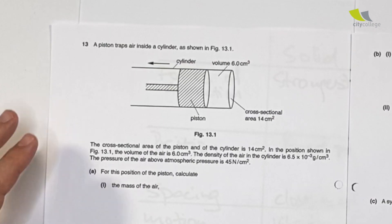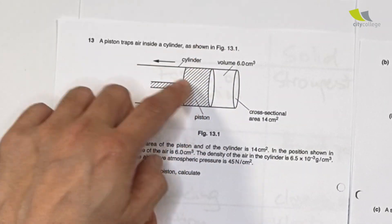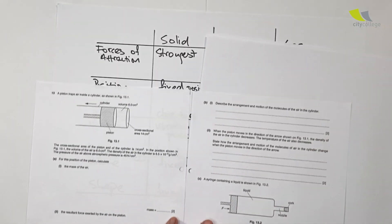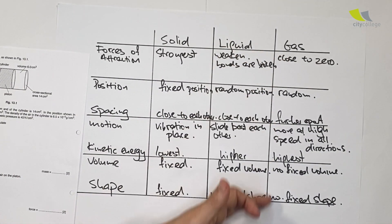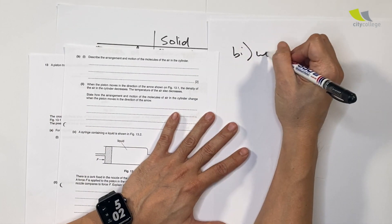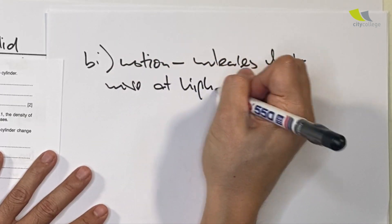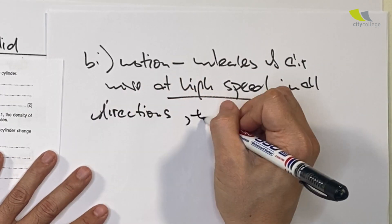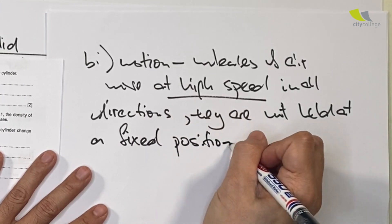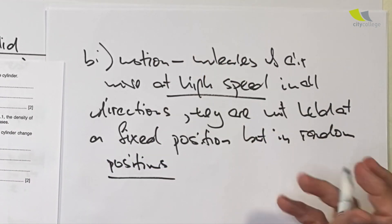Next we have the 2018 paper. The context is a cylinder with gas and a piston. Part B question 1, 2 marks: describe the arrangement and motion of the molecules of the air in the cylinder. This is basically a recall question. Motion: the molecules of air move at high speed in all directions. They are not held at a fixed position but in random positions — they are constantly moving and no longer locked at one place. That will gain you 2 marks.